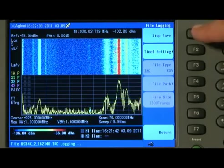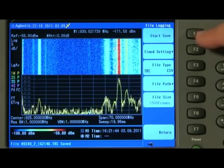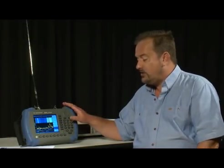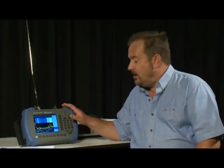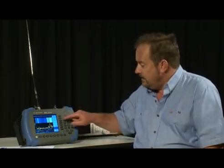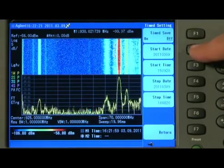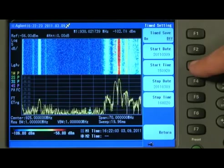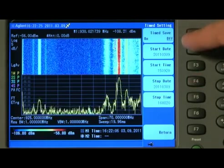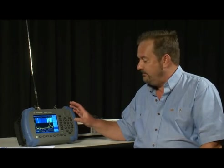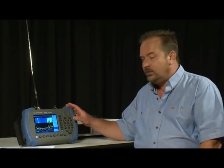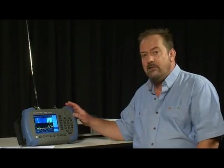I can stop it saving by pressing the Stop Save button. But if we wanted the analyzer to start logging automatically at a predetermined time, say, coming on at midnight and going on until 4 in the morning, we can set the time setting here and give it a start date, start time, stop date and stop time, and it will then automatically start logging the spectrum at that predefined time. This is an incredibly useful capability that does not require an external PC.